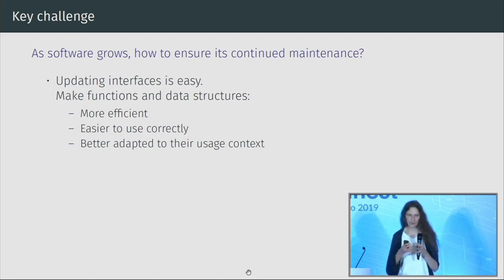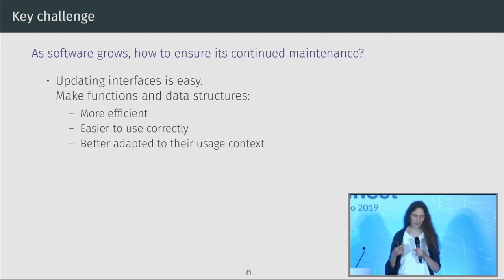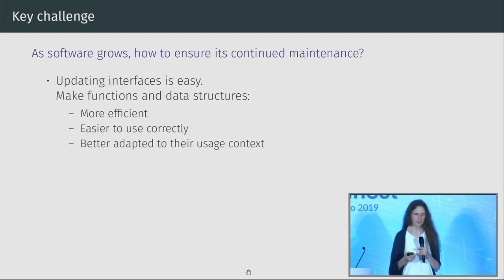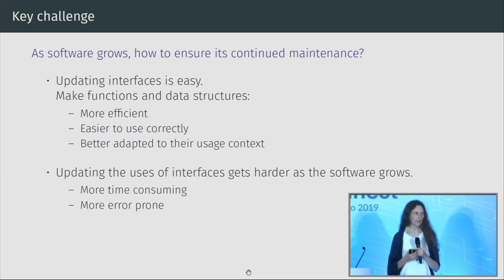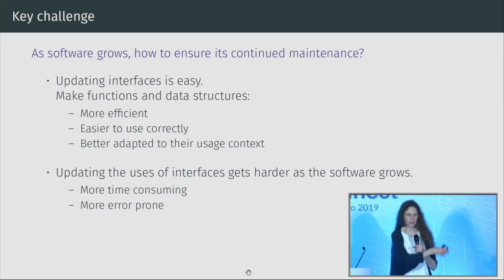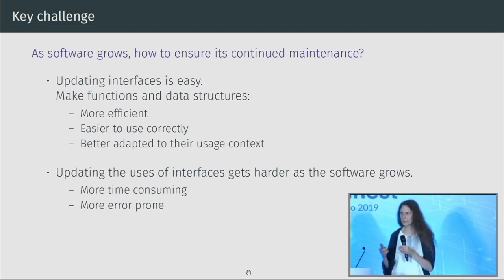When you want to improve an interface — maybe a memory allocation or structure initialization — it's fairly easy when you have a fixed finite amount of code. You might need a clever new algorithm, but it takes a finite amount of time. The problem is when you have 18 million lines of code and you've changed an interface, you need to adjust all the clients of those interfaces across those 18 million lines — that's incredibly time consuming and error prone.